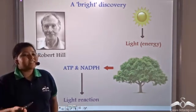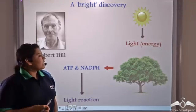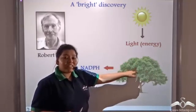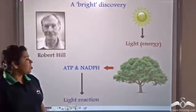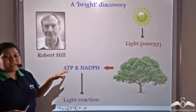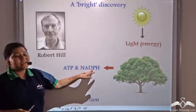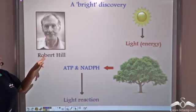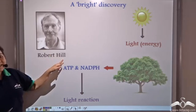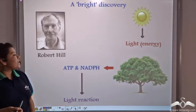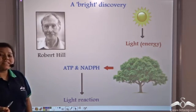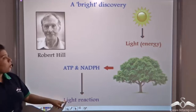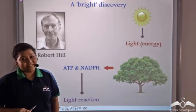This important discovery, in which light energy is converted to chemical energy in the form of ATP and NADPH, was made by scientist Robert Hill. This reaction is therefore known as the Hill reaction, or the light reaction.